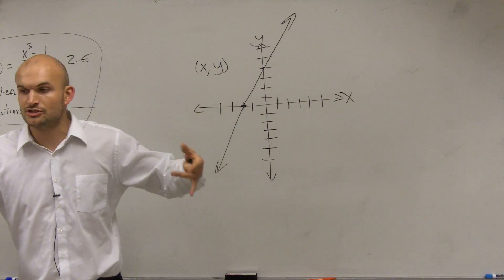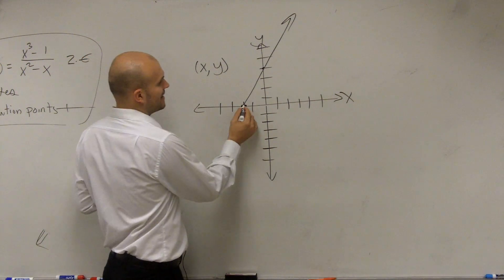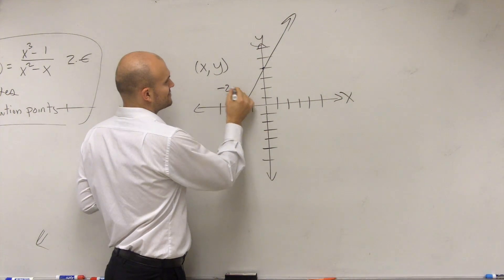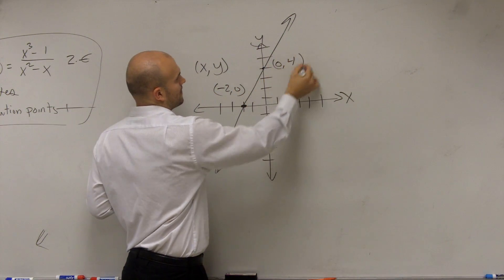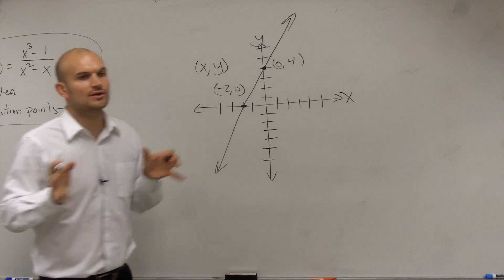So first thing I need to do is determine what are two points I can compare. On this graph, we have one point, (-2, 0), and we have another point, (0, 4). When you look at your graph, you can notice those are your two points.